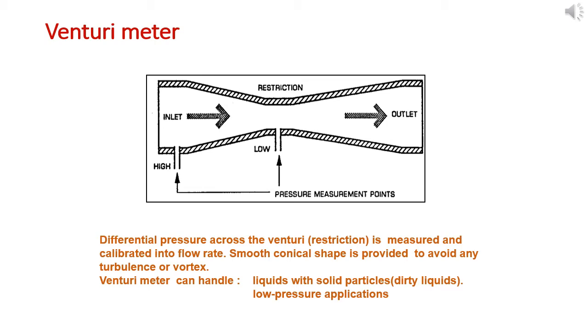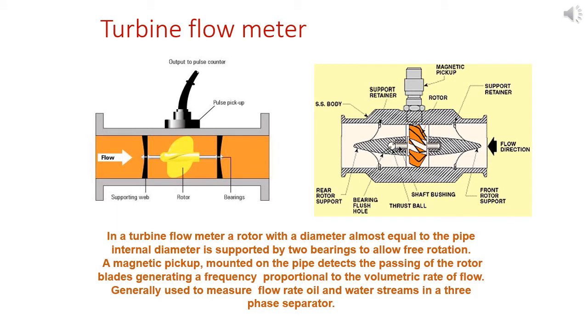Another flow measuring device is the turbine flow meter. In a turbine flow meter, a rotor with diameter almost equal to the pipe internal diameter is supported by two bearings to allow free rotation. A magnetic pickup mounted on the pipe detects the passing of the rotor blades, generating a frequency proportional to the volumetric flow rate. It's generally used to measure the flow rate of oil and water streams in three-phase separators. Turbine flow meters (TFM) are also used in crude oil export meters or metering stations and provide very accurate readings.